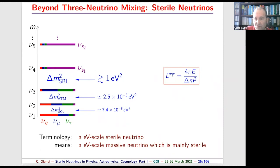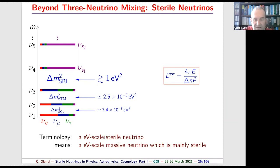We need to add a heavier neutrino because the oscillation length is inversely proportional to Δm², so to explain oscillations at shorter baselines we need a larger Δm². This new massive neutrino is called a 'sterile neutrino at the electron-volt scale' — an approximate terminology indicating a new massive neutrino at some energy scale that is mainly sterile, since the flavor and mass bases are different concepts.